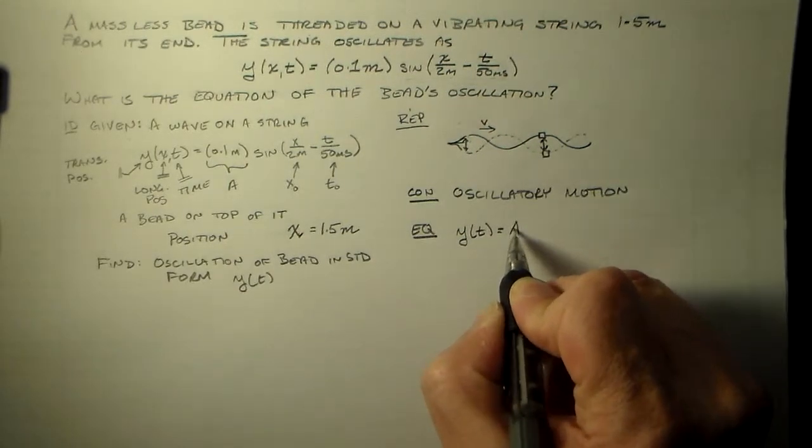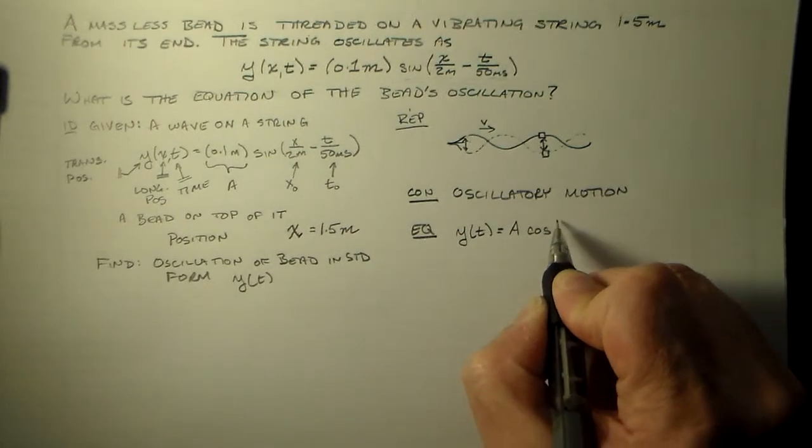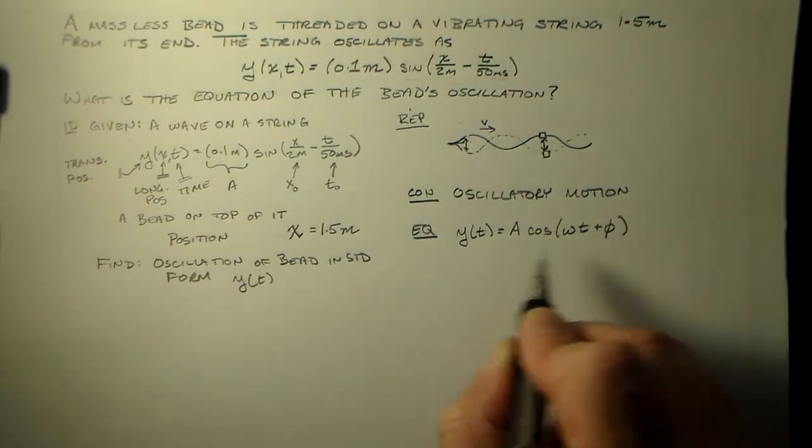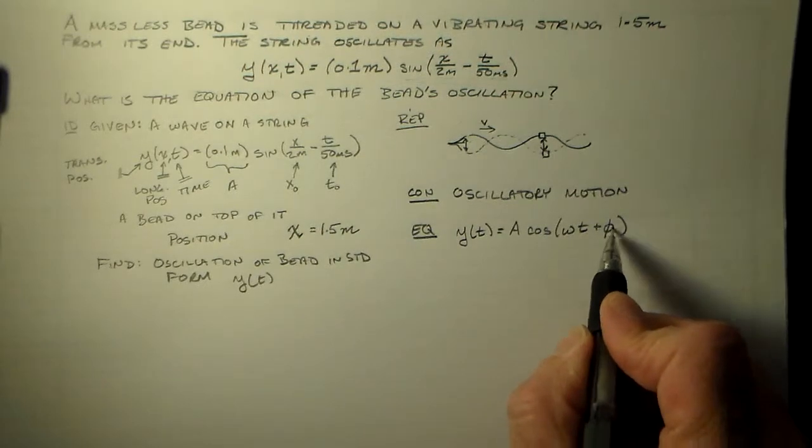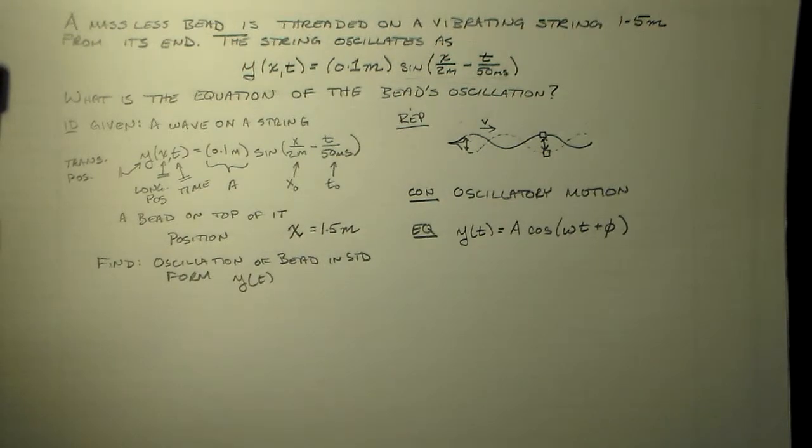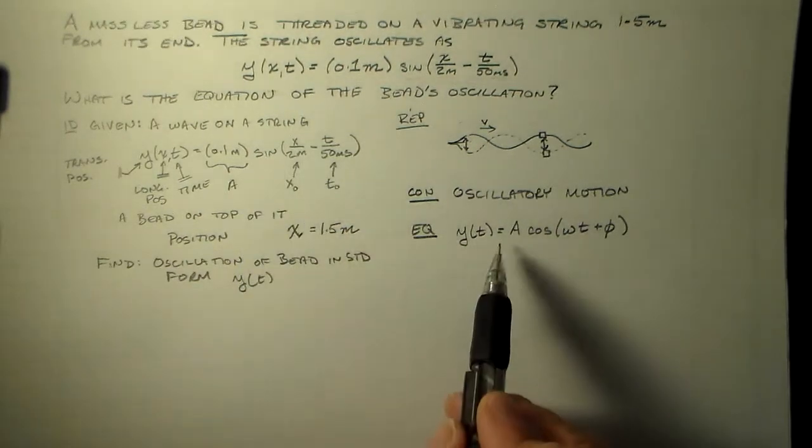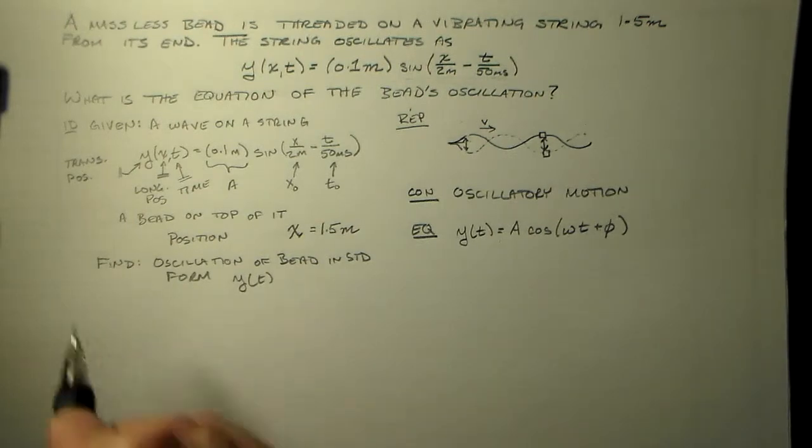It's oscillatory motion, so we can use as the equation the standard form for an oscillation, y(t) is equal to the amplitude times cosine of ωt plus φ. So we have frequency time plus phase shift. And now we just want to work to get this into that form. That's all we need to do.